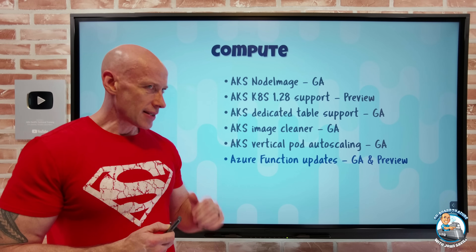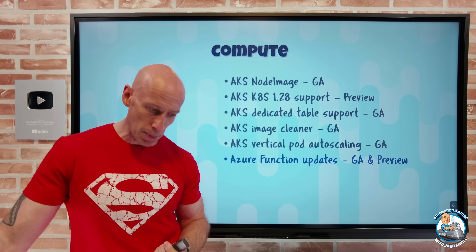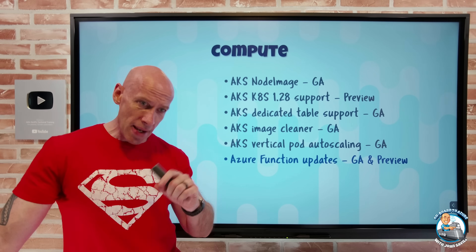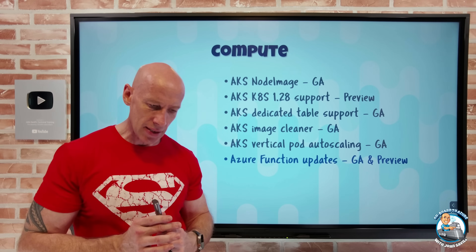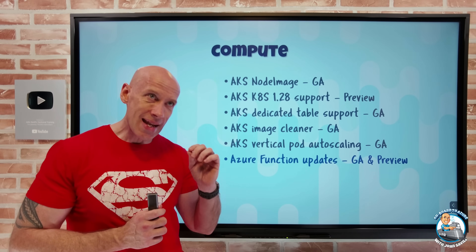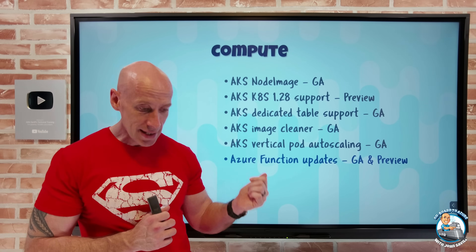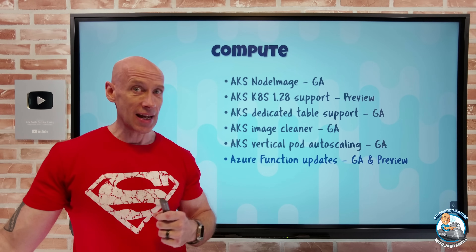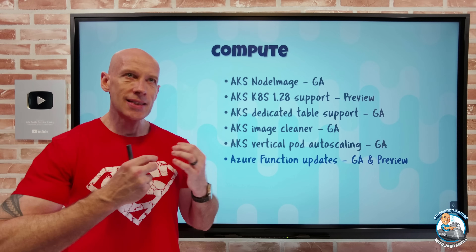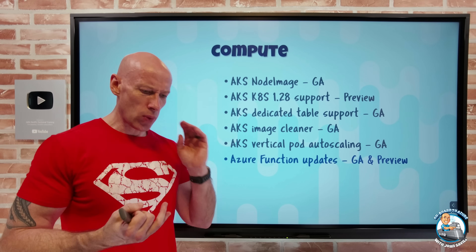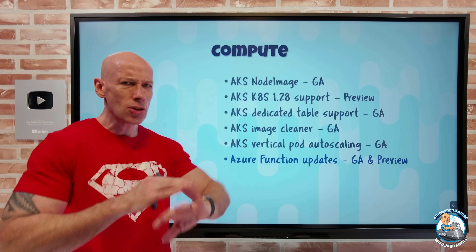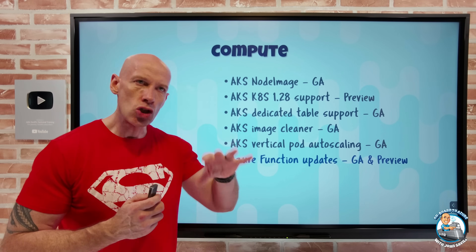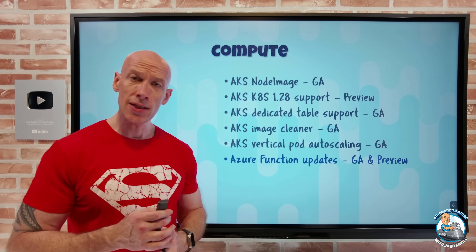Azure Functions has a number of updates — some GA, some preview. In GA: Python 3.11 support, and for Node.js the V4 programming model, which offers a better folder structure, simplified trigger configuration, the fetch standard for HTTP request and response types, and IntelliSense support. In preview: a DAPR extension — DAPR provides standard ways to interact with actors, secrets, service discovery, bindings, and much more. Functions can now simply integrate with those DAPR APIs and utilize those services. It also now has Node.js support for Windows and Linux.